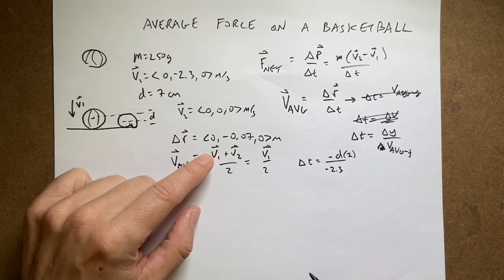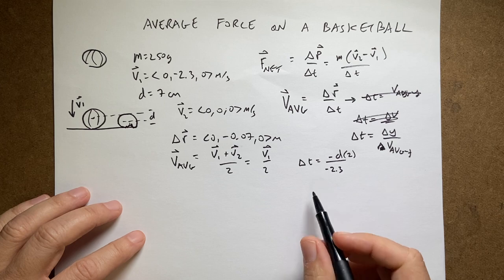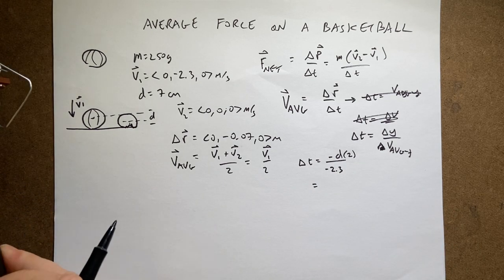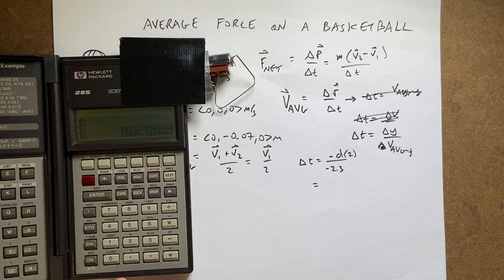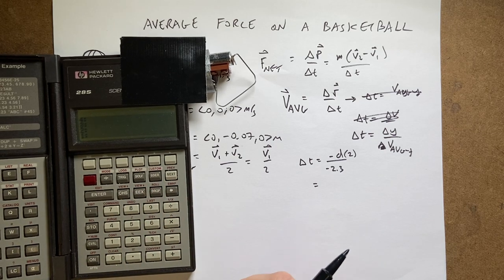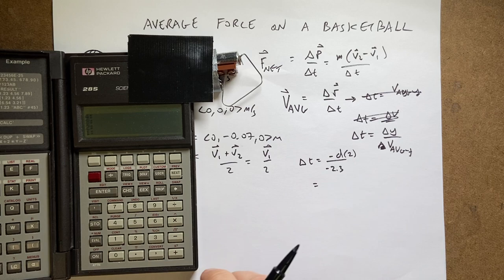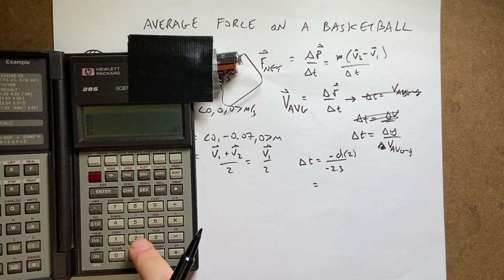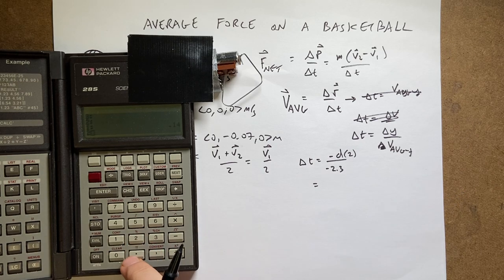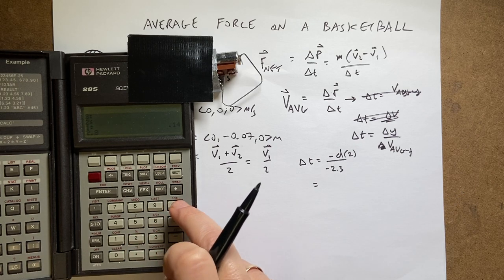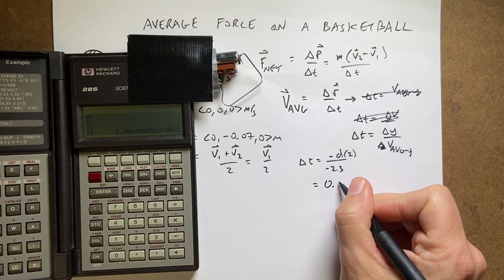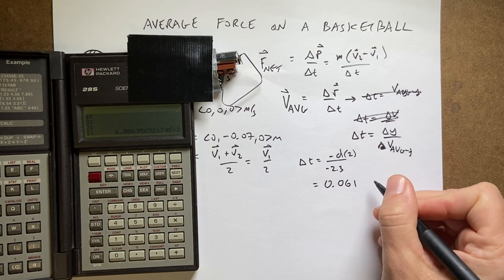So I'll put the 2 up there. So now I can get delta t. I'm going to put in 0.07, this is to get my value for delta t. Pull my calculator, so I'm going to put d as, and the negatives cancel, so I get 0.07, 2 times 2.3 divided by.